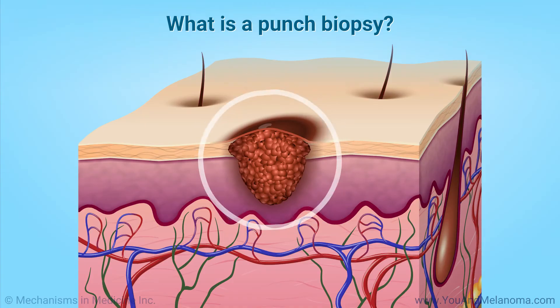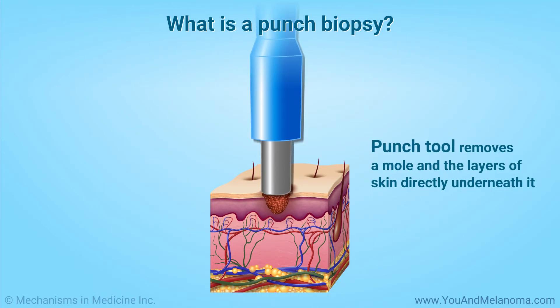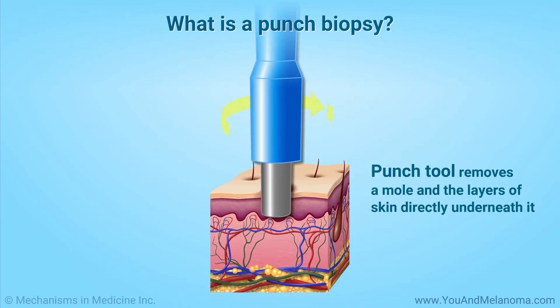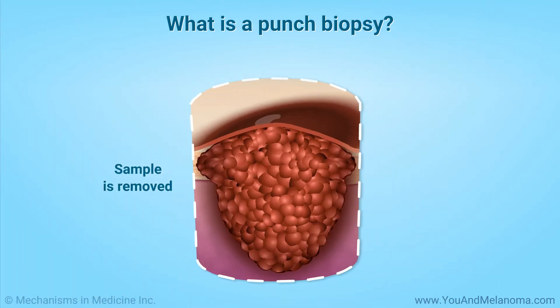In a punch biopsy, the doctor uses a pencil-like tool to remove a mole and the layers of skin directly underneath it.